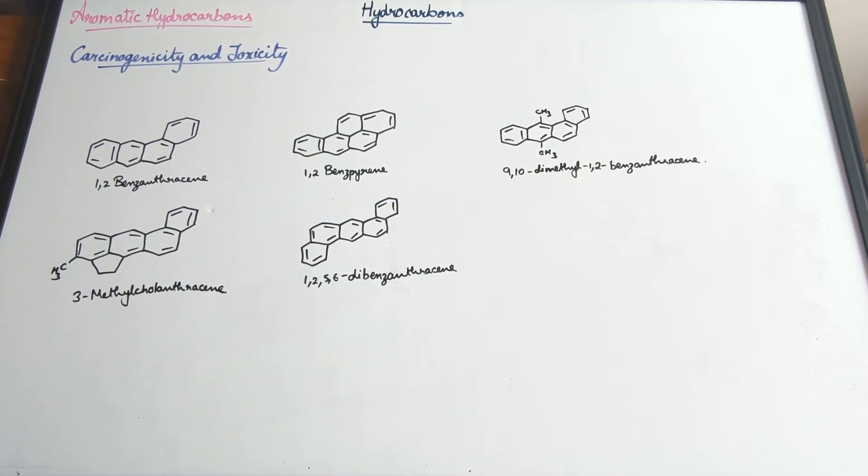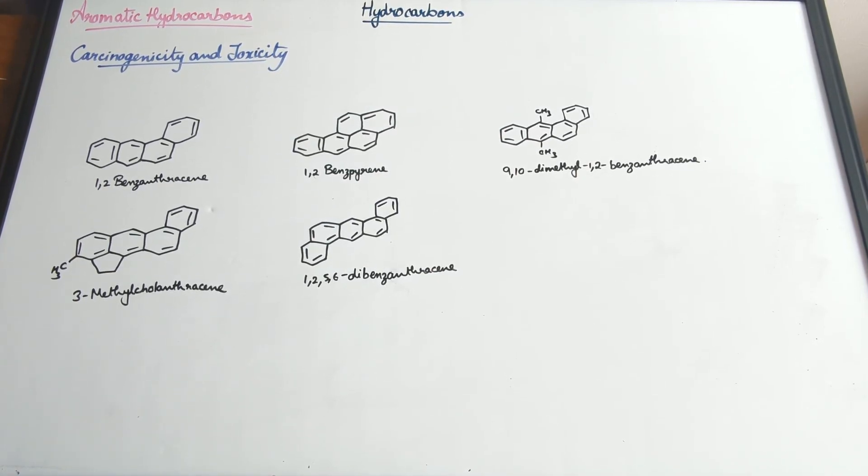This is the last topic of this chapter: carcinogenicity and toxicity of aromatic hydrocarbons. Benzene and all the polynuclear hydrocarbons which contain more than two benzene rings fused together are toxic. They have carcinogenicity, which means they can cause cancer.